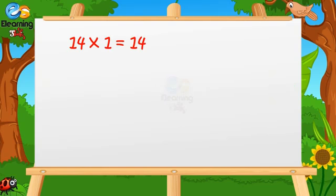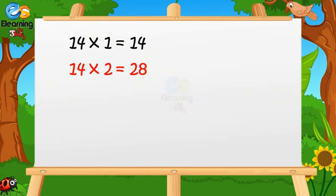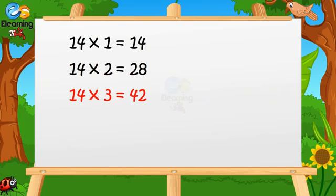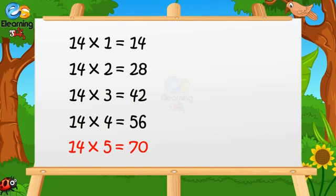14 ones are fourteen. 14 twos are twenty-eight. 14 threes are forty-two. 14 fours are fifty-six. 14 fives are seventy.